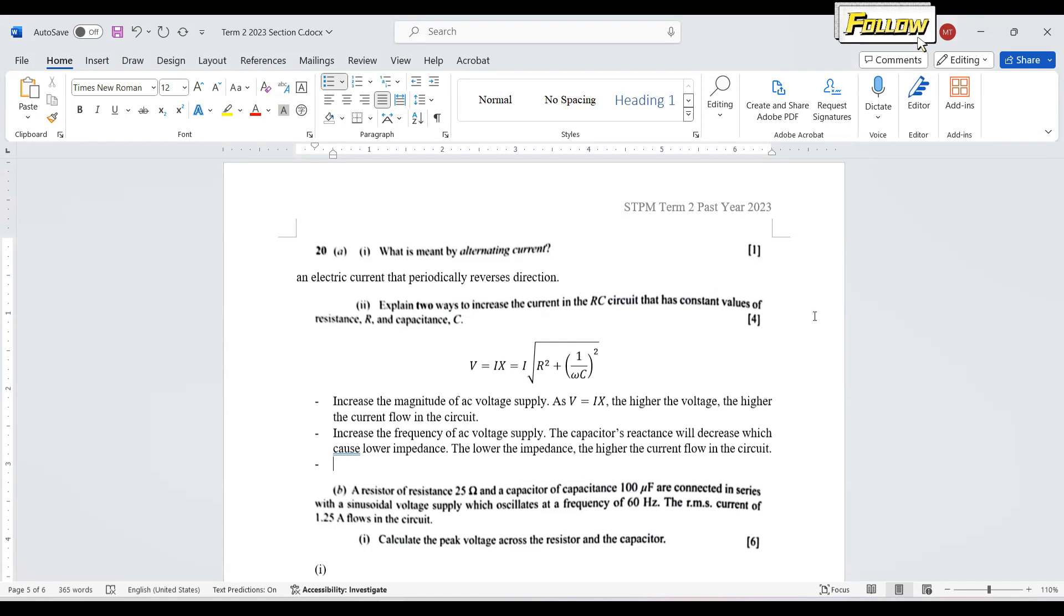First one, what is meant by alternating current? It is an electric current that periodically reverses its direction.